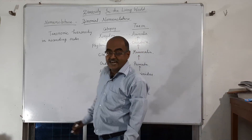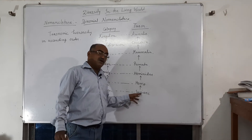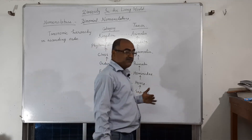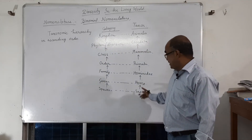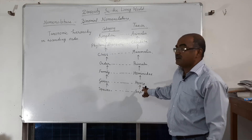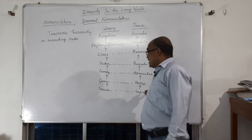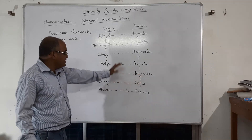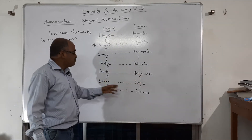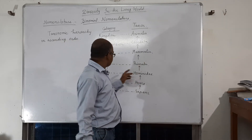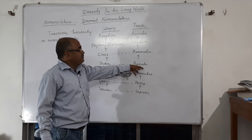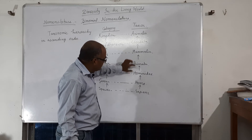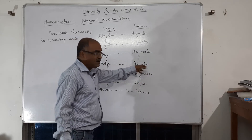For example, Homo sapiens, Homo erectus, Homo neanderthalensis — these are different species of human beings, and we are Homo sapiens. Some species together form one genus. Again, some genera together form a family, like Hominidae. Hominidae is a family where a number of genera are present. Next, the order — order means Primata. In Primata, some families together form the Primata group.